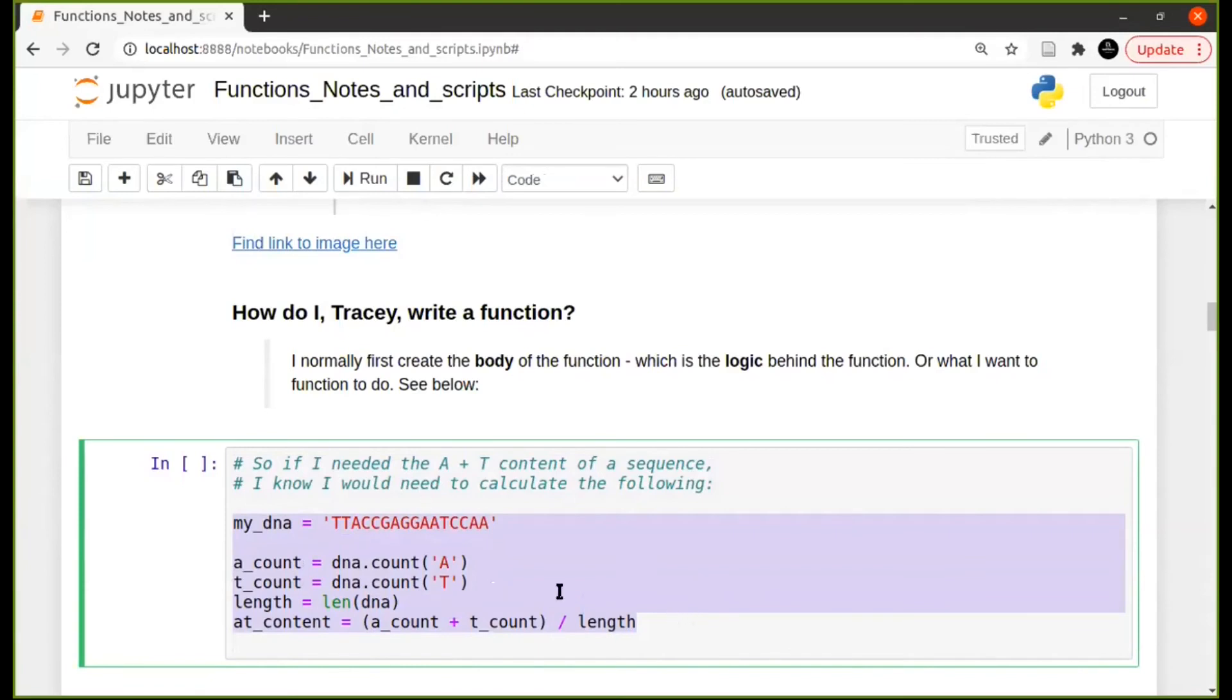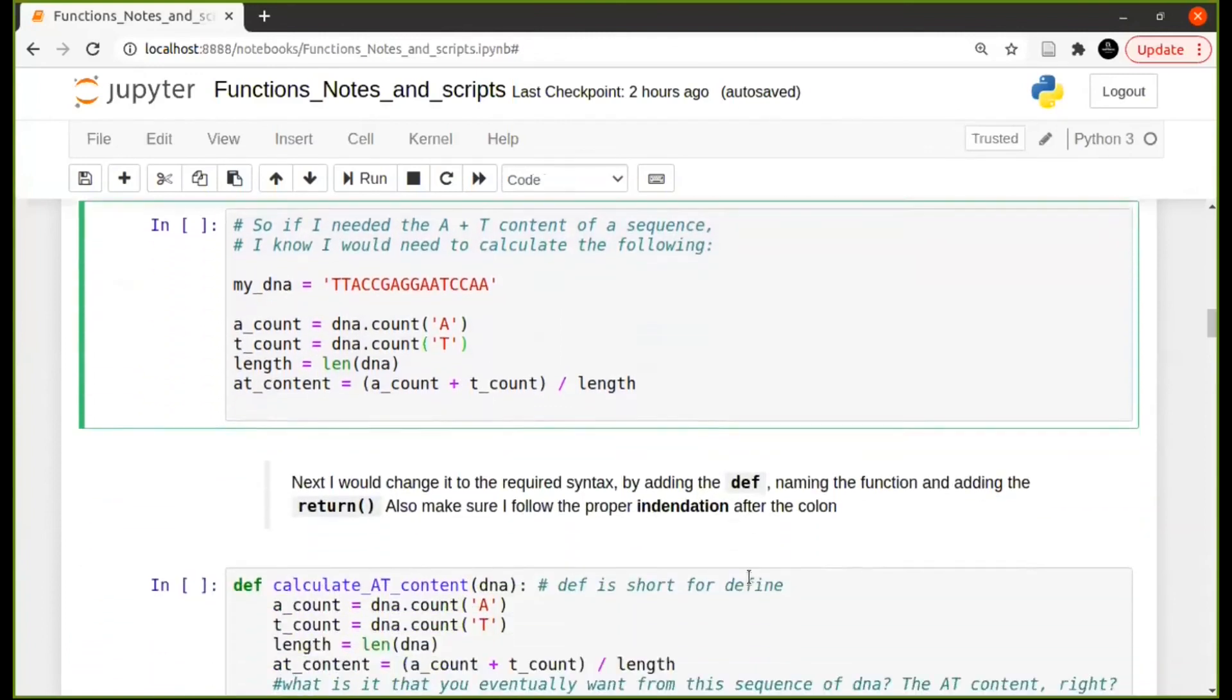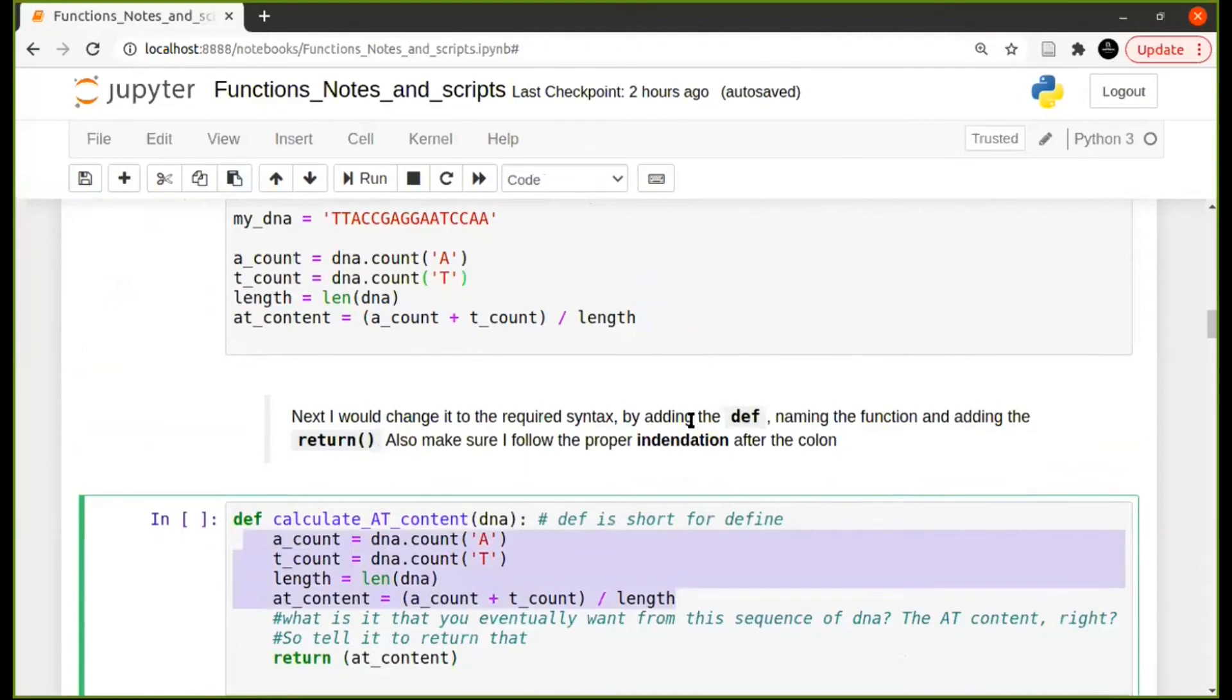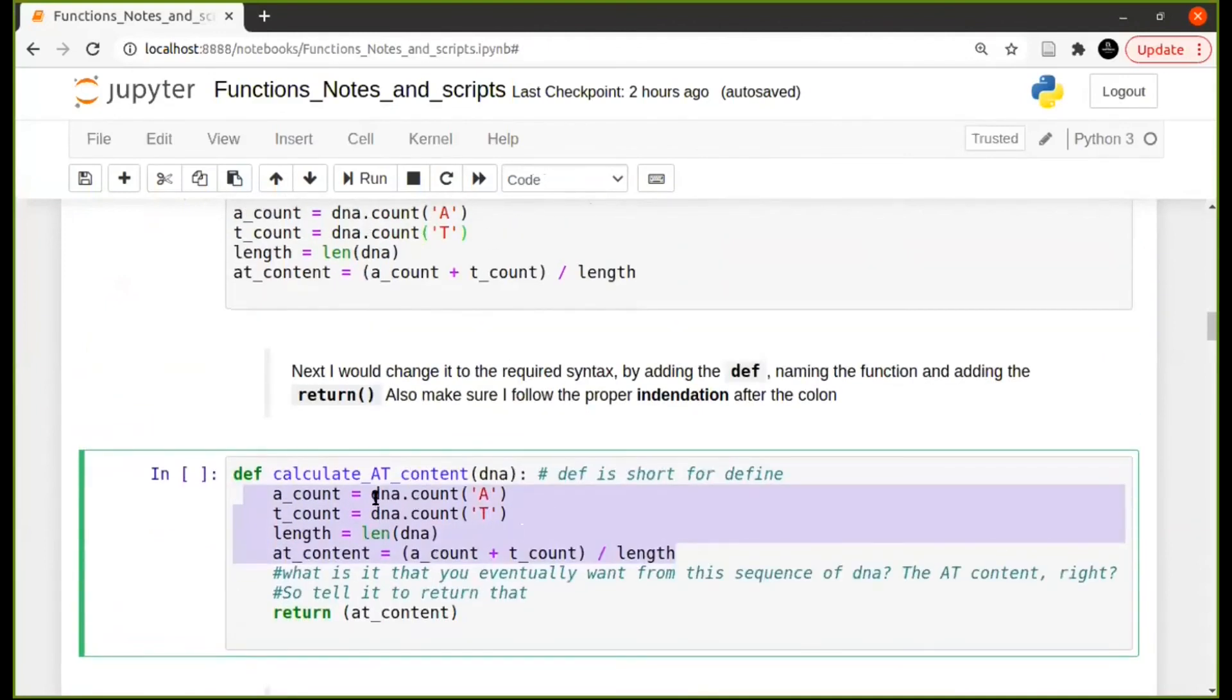And once that is done, I will then go ahead and add the syntax of a function to it. So again, this part should be familiar. This is what we just saw up here. This is the logic behind my function. In order to change it into a function, I need to add this line here, def, to define a function. And then I give it, I give my function a name, which is calculate AT content. And then it's going to take an argument, which is the DNA sequence for which I want to calculate the A and the T content for. And then obviously this part is completely familiar to you. And then lastly, I will add a return statement, which is going to return to me what I wanted to return, which is this.